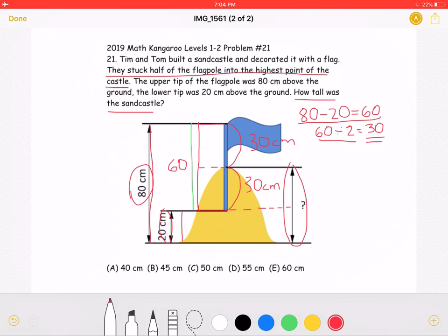This is equal to 30 cm, the bottom half of the flagpole, plus the 20 cm shown right here, which will give us a total of 50 cm.